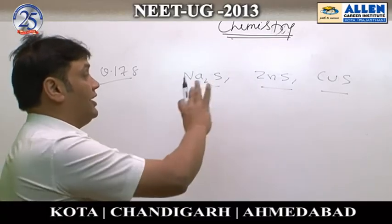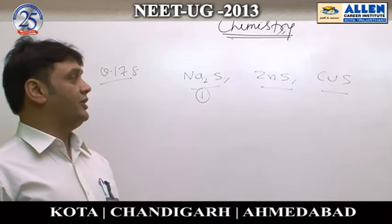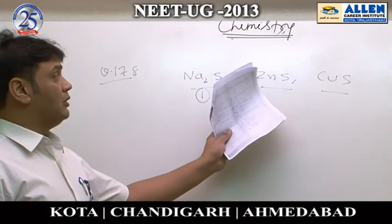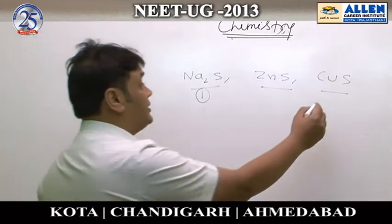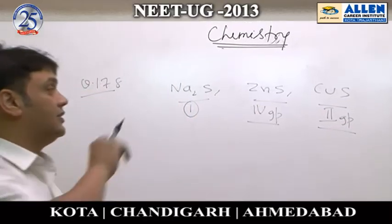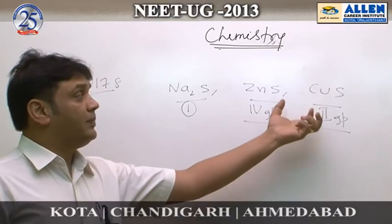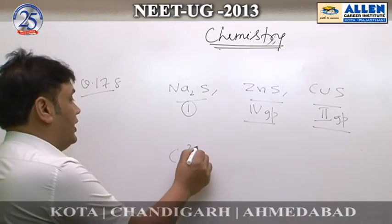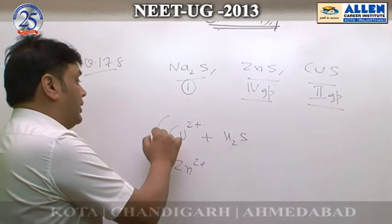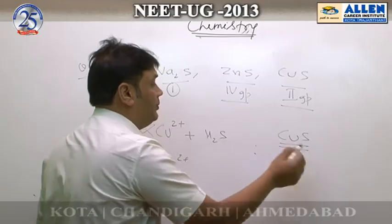Amongst these compounds, Na₂S is most soluble and will be ranked number one. Now comparing zinc sulphide and copper sulphide: in qualitative analysis, copper sulphide belongs to group 2 while zinc sulphide belongs to group 4. Being in group 2 means CuS has a very low KSP, giving it a better chance to precipitate. When H₂S is added to a solution containing both Cu²⁺ and Zn²⁺ ions, copper sulphide precipitates preferentially because it is more insoluble due to its lower KSP value.